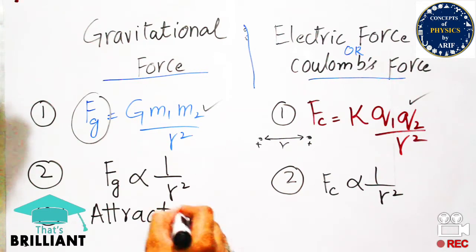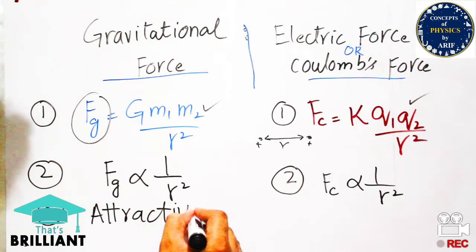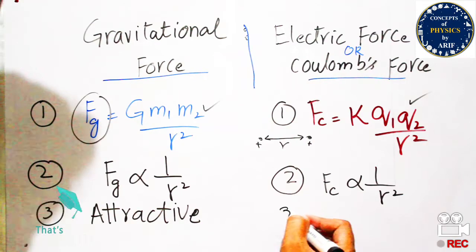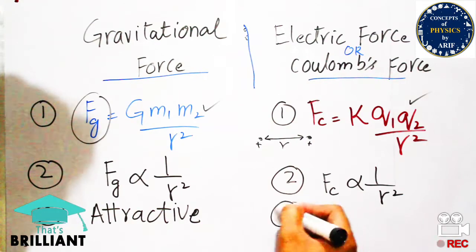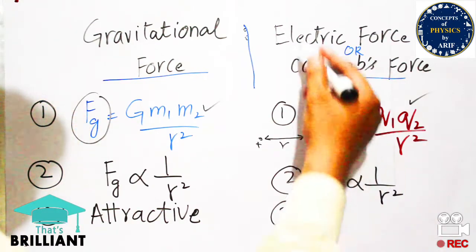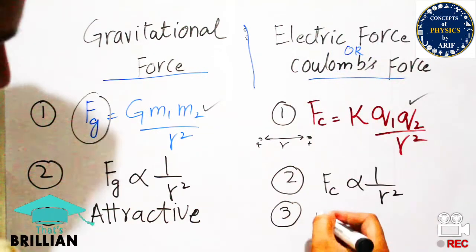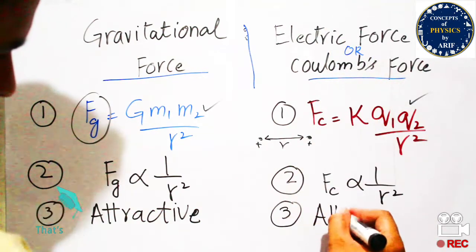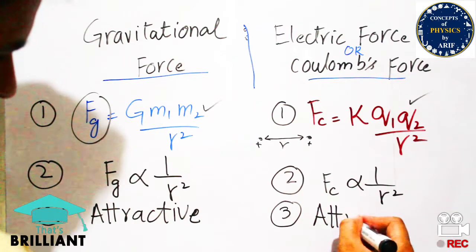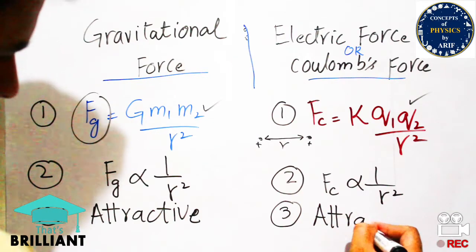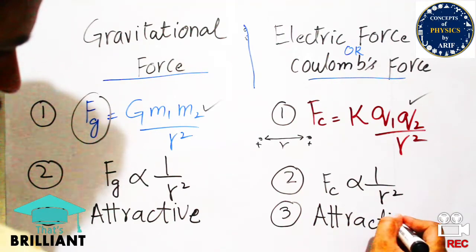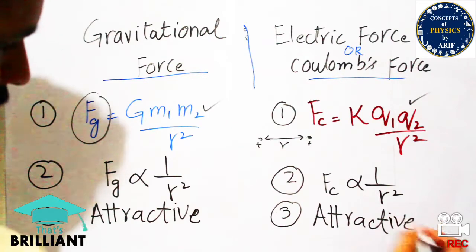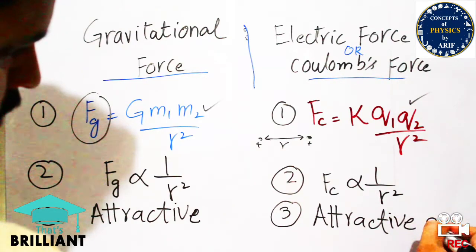The gravitational force is only an attractive force. It means that when a body is placed at some height, it only attracts. But in the case of electric force or Coulomb force, it is attractive as well as repulsive between two charges.